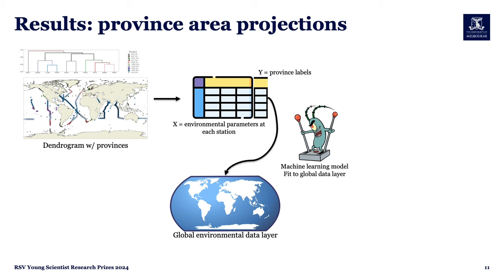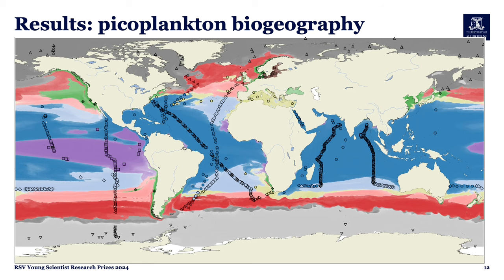We trained a machine learning model to predict the type of province at each sampling station based on environmental parameters at each dot on the map, then fit that model to a global environmental data layer to see how provinces were distributed across the global oceans. The result gives us these 10 distinct biogeographic provinces of picoplankton, each influenced by different environmental drivers. The provinces follow a latitudinal gradient but are also influenced by physical factors such as proximity to coastlines and ocean currents.